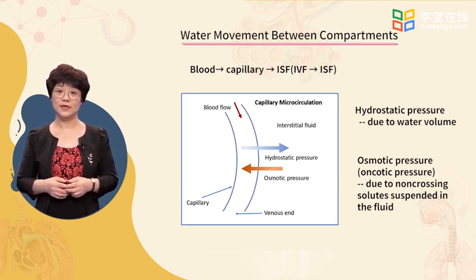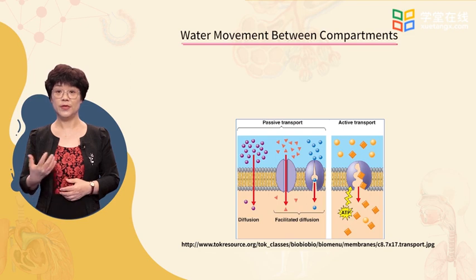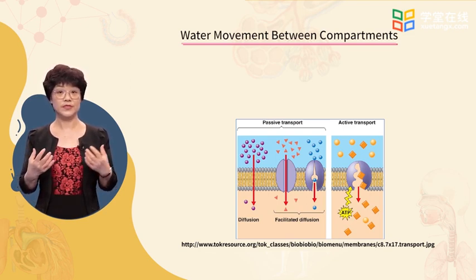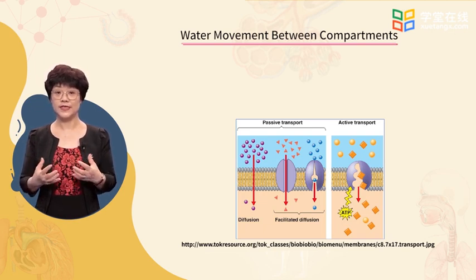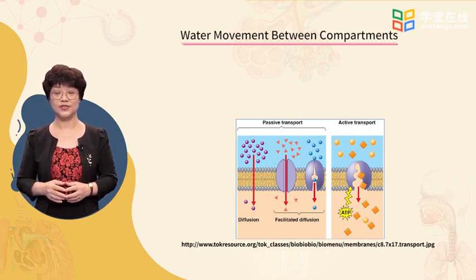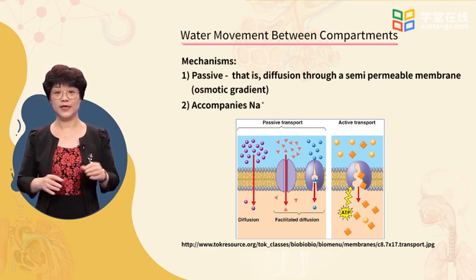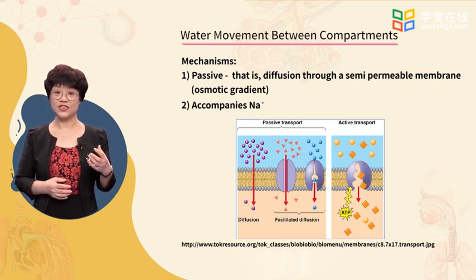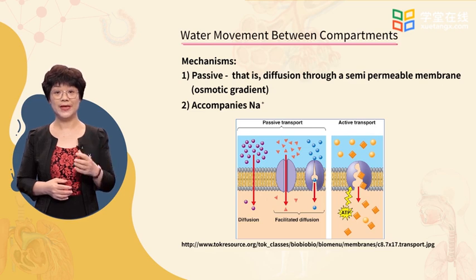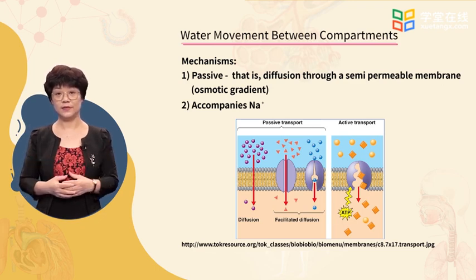This fluid movement is between the intravascular and interstitial parts of the ECF. Fluid exchange between the ICF and ECF happens between cells and the interstitial part of the ECF. Passive and active mechanisms control fluid exchange at this level. Passive exchanges happen generally through osmosis, while active exchanges occur through the sodium-potassium pump, where water goes in and out together with sodium.